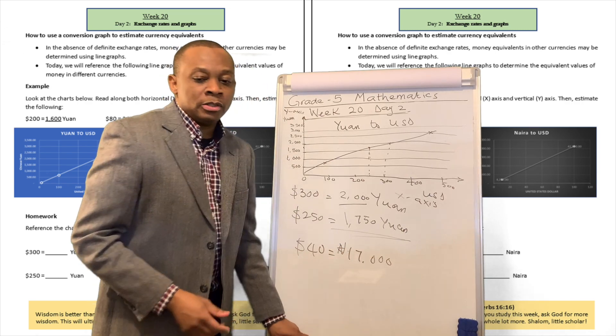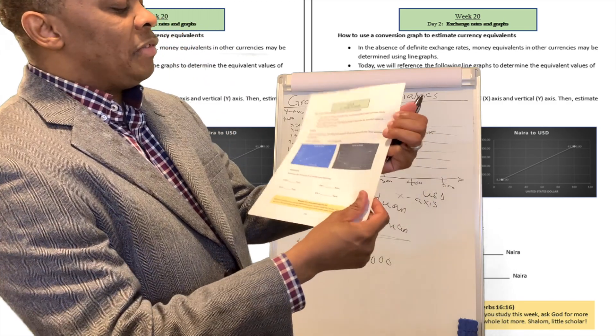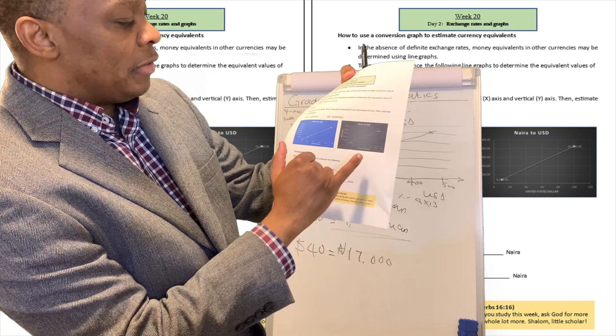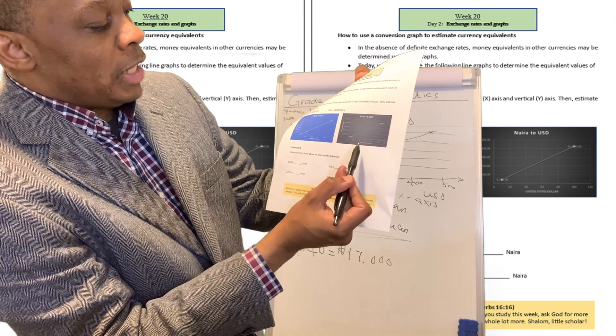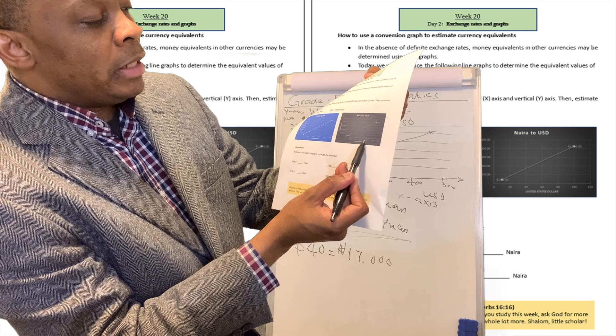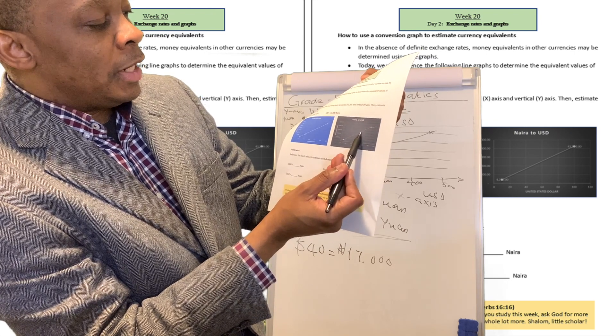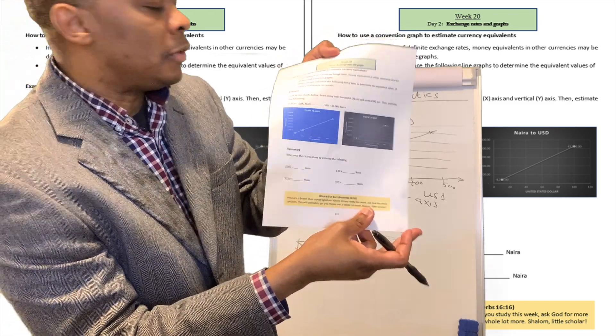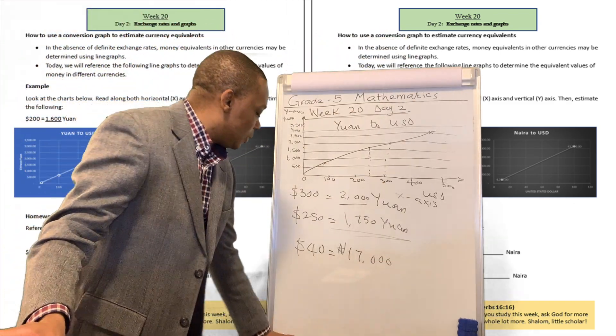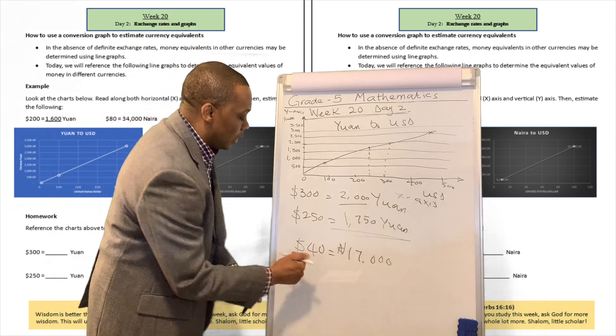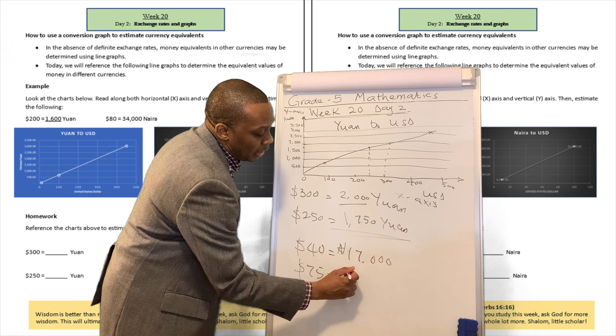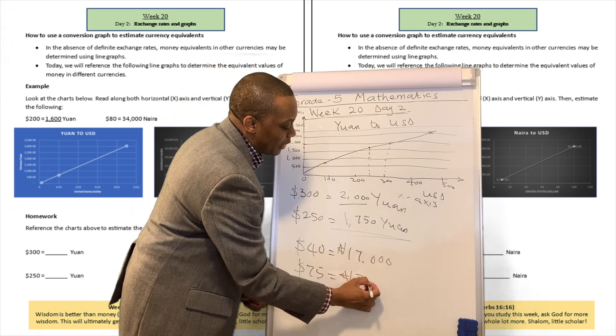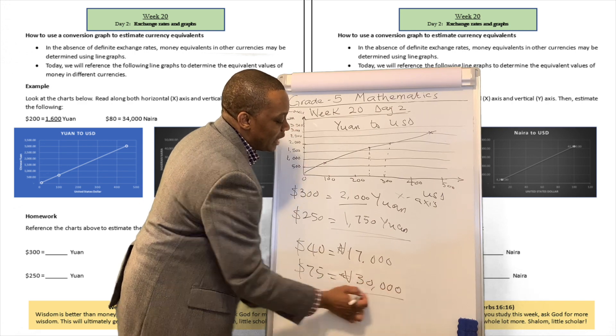They want us to find out what is the worth of $75 looking at this chart. You're going to see $75 right in between $60 and $80, a little bit close to $80. You move it over there, it's going to be approximately equivalent to $30,000. So $75 is going to be approximately equivalent to $30,000 Naira.